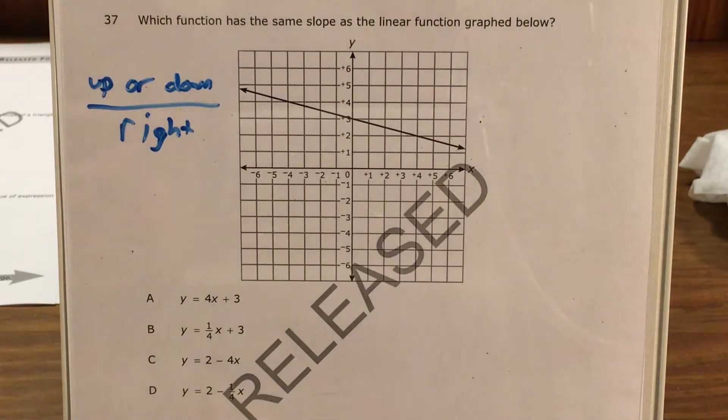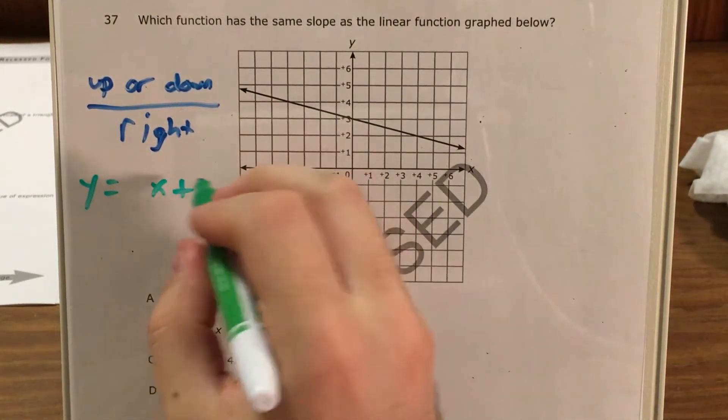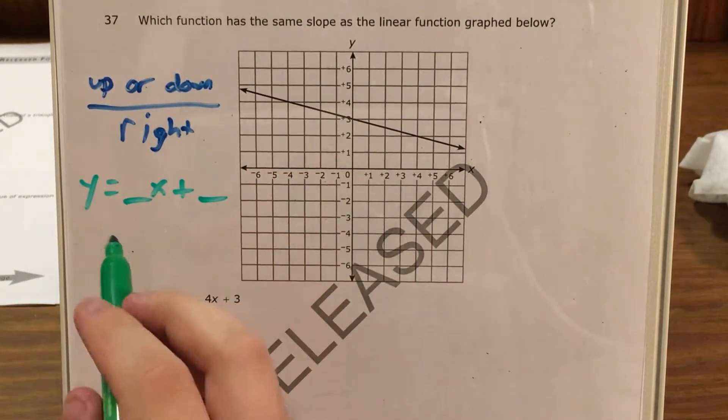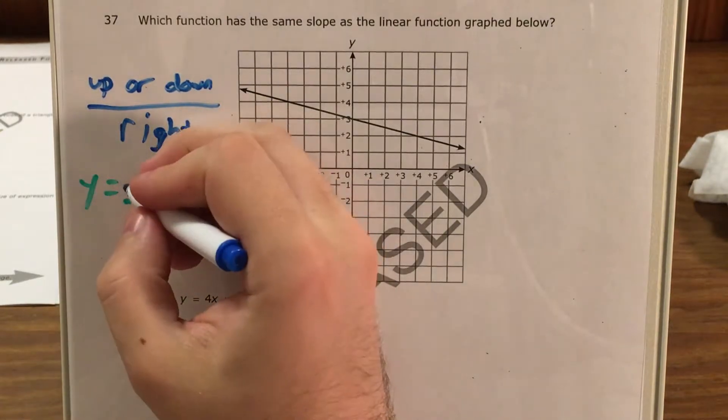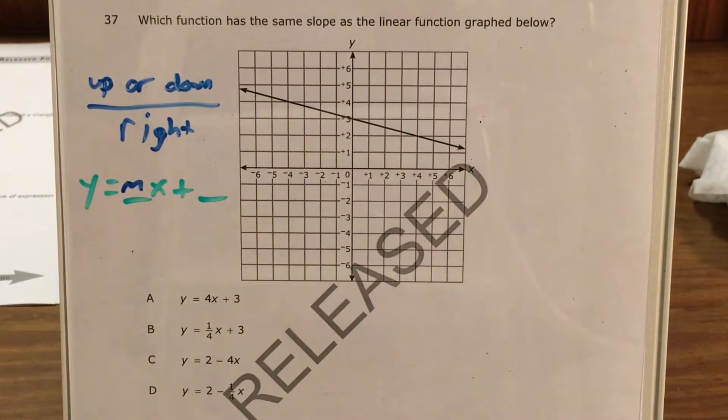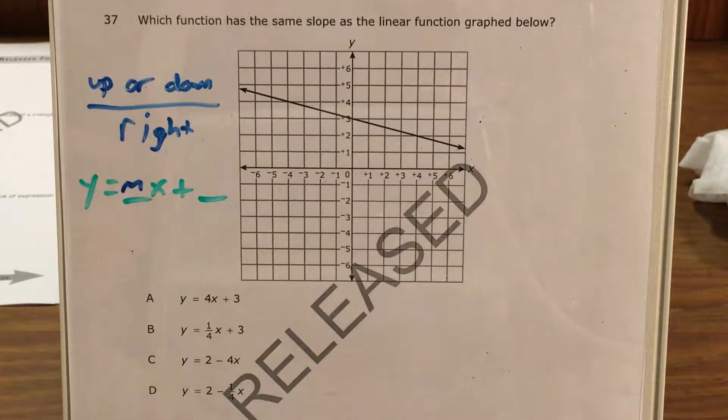And then I'll also remind myself that in a function that looks like y equals something x plus something, my slope also known as m, no idea how they got that letter. But my slope is going to be the coefficient of x, the number that's attached to x.